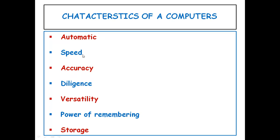Another characteristic of a computer is speed. A computer is a very fast device. It can perform in a few seconds the amount of work that a human being can do in an entire year. When talking about the speed of a computer we do not talk in terms of seconds or even milliseconds, but in terms of microseconds, nanoseconds, or picoseconds. A powerful computer is capable of performing several billion simple arithmetic operations per second.